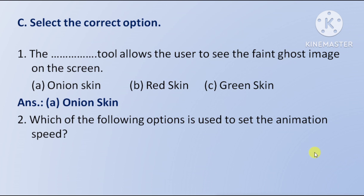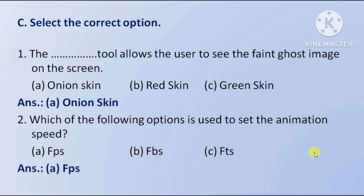Next question: which of the following options is used to set the animation speed? Option A: FPS, Option B: FBS, Option C: FTS. The right answer is Option A — FPS.